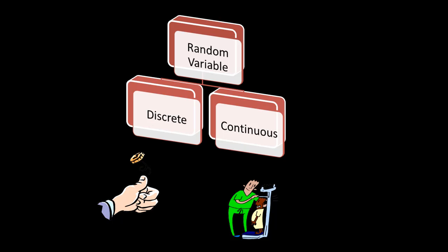Random variables can be discrete, like a coin toss which can be heads or tails, or rolling a die which can be 1 through 6, or whether it will rain or not tomorrow. These are discrete random variables. Or you could have continuous random variables — like heights or weights of people — which can take on continuous real values. So random variables can be continuous or discrete.